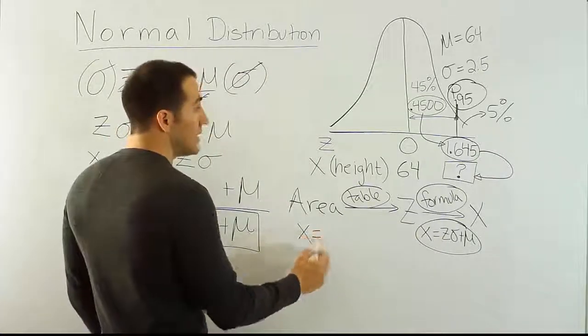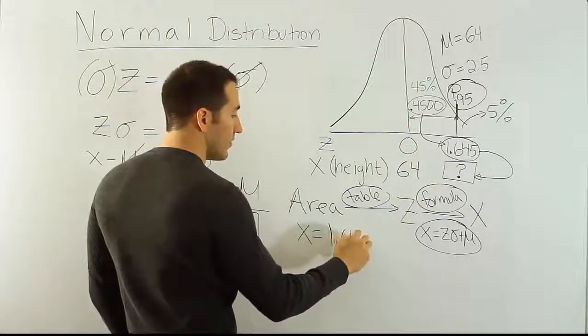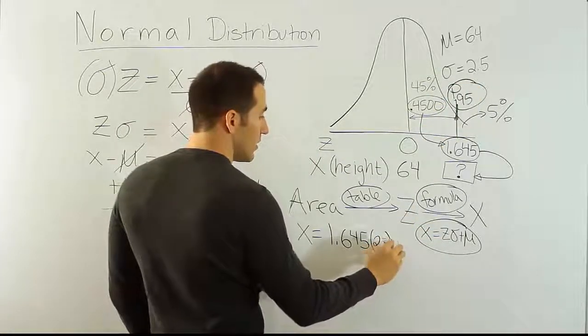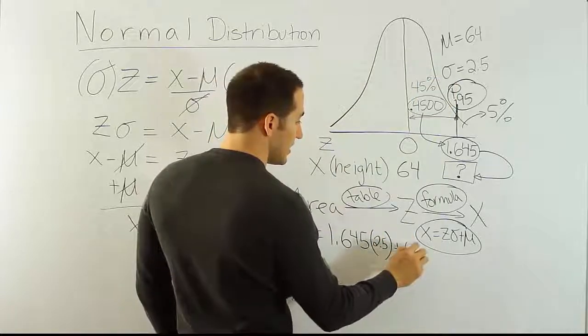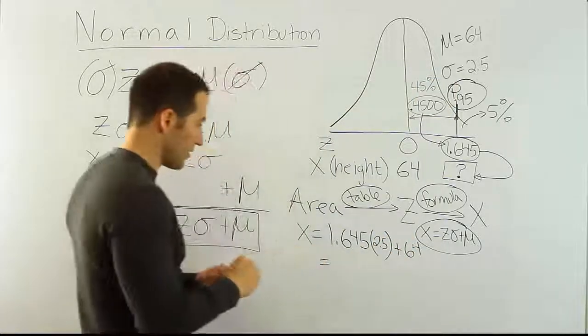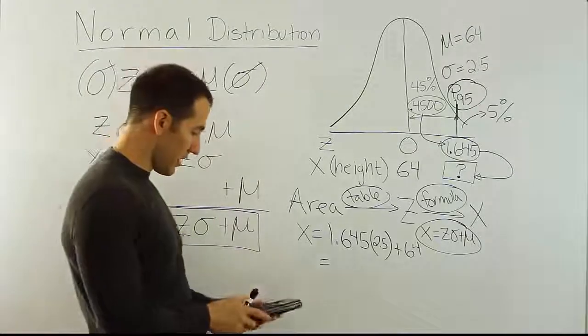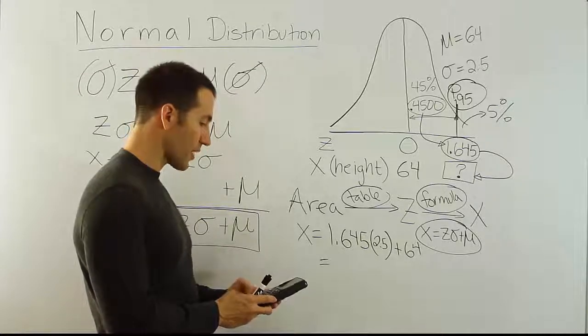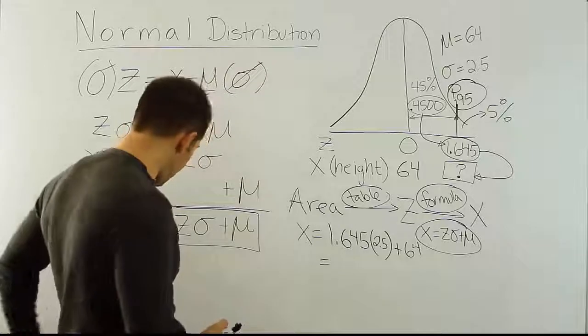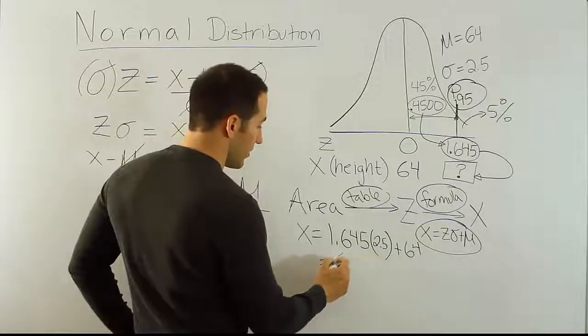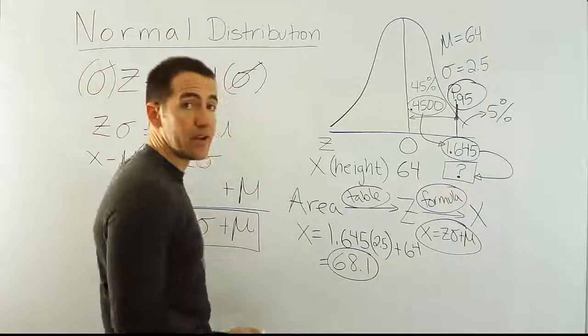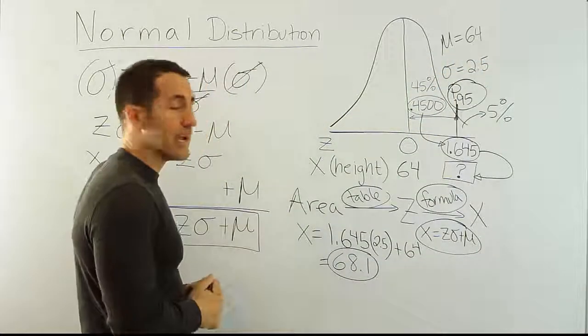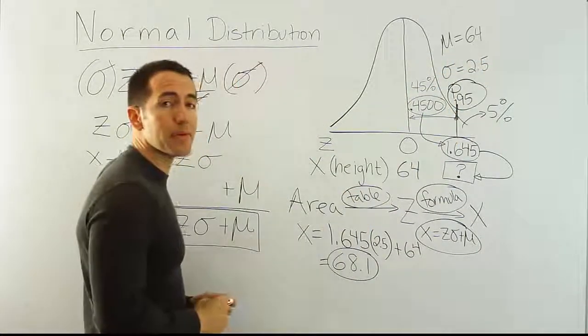We would have x is equal to z, which is 1.645, times σ, σ is 2.5, plus the mean, which is 64. And if you actually do that, just so we have an answer to this problem, if you actually plug all that in, 1.645 times 2.5 plus 64, we end up with the answer 68.1 inches, essentially. 68.1, or about 5'8", in other words. So a woman has to be, if these numbers are true in fact, a woman has to be about 5'8", to be taller than 95% of the female population.